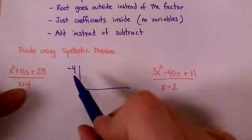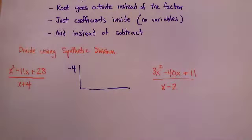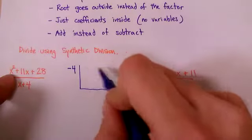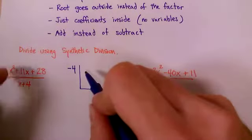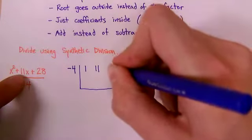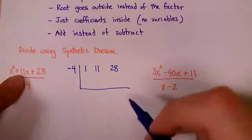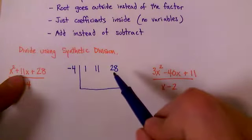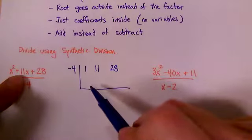You might see it written slightly different with how you do your box, but this is how I was taught. On the inside, you'll have just the coefficients, the top row coefficients on your numbers. So it's a one x², it's a positive 11 and it's a positive 28 right here. Kids end up liking this better sometimes because there's no variables here. You just have your numbers.